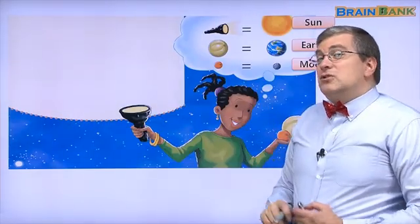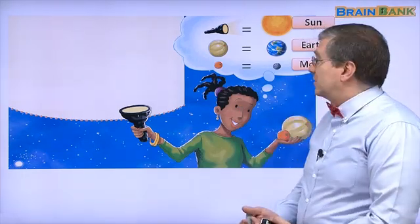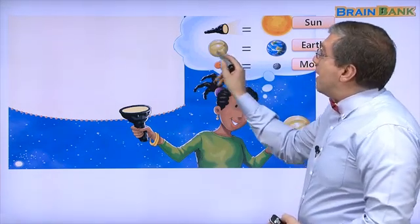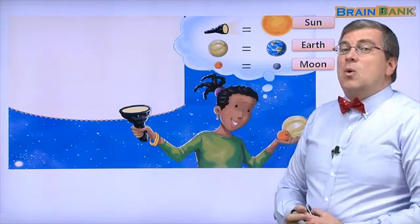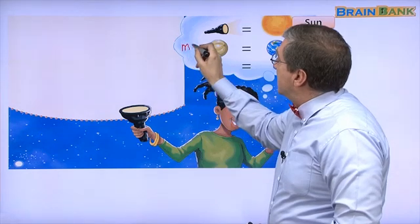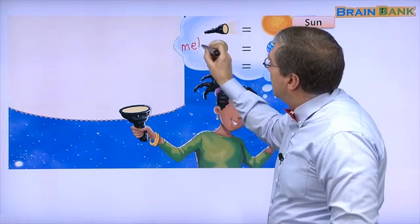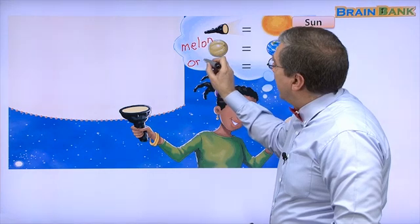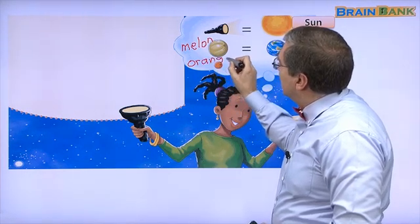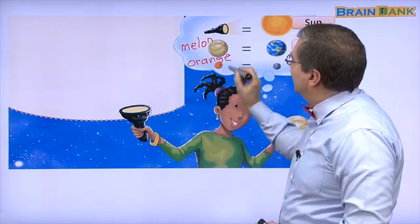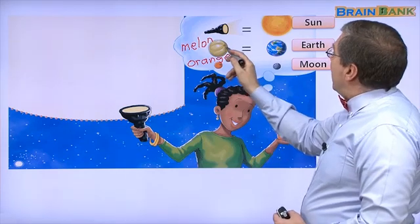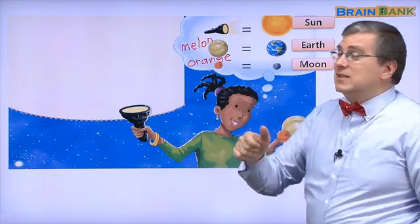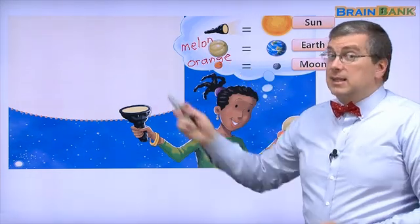Mom is going to show Amy how to make a solar eclipse. Do you remember 과일 — the fruit? This is a melon. This is an orange. Melon — M-E-L-O-N. Orange — O-R-A-N-G-E. Melon and orange. So the melon equals the earth. The orange is the moon. And a flashlight is the sun.